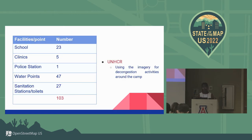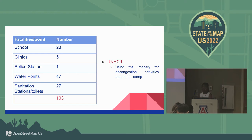As much as most of our mapping was buildings, our aim was to show the provision of different needs. These are the facilities we were able to map out: 23 schools, 5 clinics, 1 police station, 47 water points, and 27 toilets or sanitation stations. This data collection was actually done by the people we had trained at the camp.